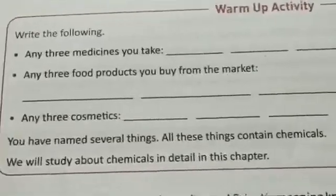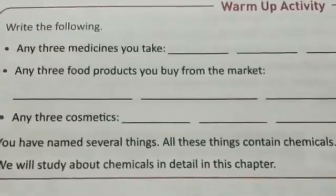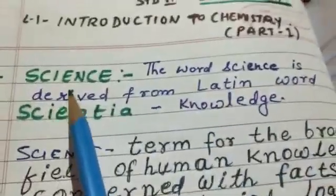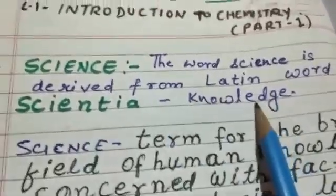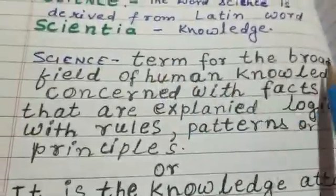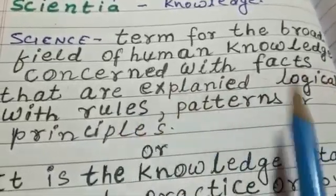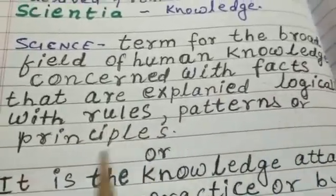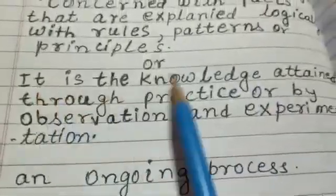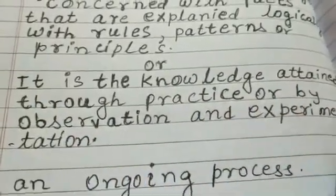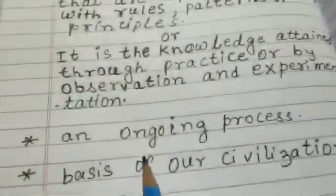In the warm-up activity, you have to write the names of any three medicines you take, three food products you buy from the market, and three cosmetics. Cosmetics means products used for your personal care like soaps, creams, shampoos, etc. Now, the word 'science' is derived from the Latin word 'scientia,' which means knowledge. Science is the broad field of human knowledge concerned with facts explained by logical rules, patterns, or principles, attained through practice, observation, and experimentation.